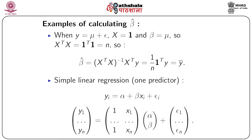Let us look at an example of calculating the estimated coefficient β̂. Suppose y = μ + ε, so the design matrix X = 1 (a vector of ones) and β = μ. Then X'X = 1'1 = n, and β̂ = (X'X)⁻¹X'y = (1/n)·1'y, which is the sum of all the y values divided by n — nothing but the average value of the response variable.